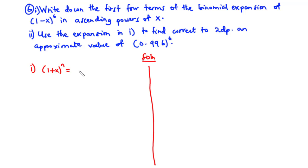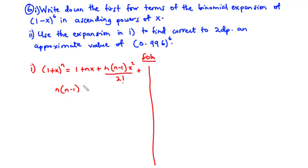The general binomial expansion is: 1 plus nx plus n(n minus 1)x squared over 2 factorial, plus n(n minus 1)(n minus 2)x cubed over 3 factorial, and so on. Since we only need the first four terms, we stop there.